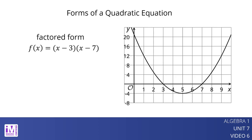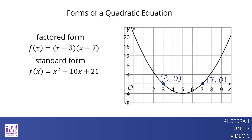From factored form, we can tell that the x-intercepts are (3, 0) and (7, 0). From standard form, we can tell that the y-intercept is (0, 21).